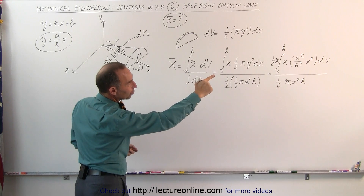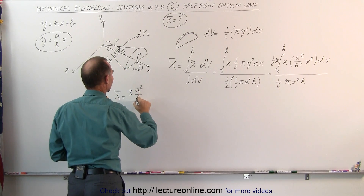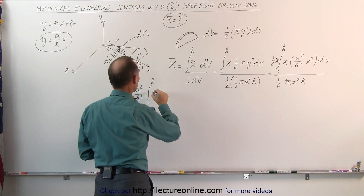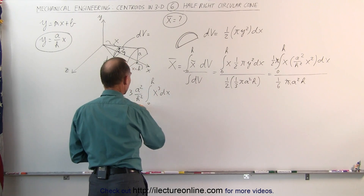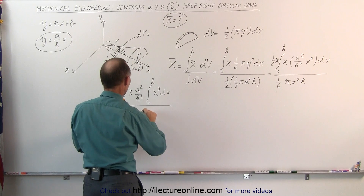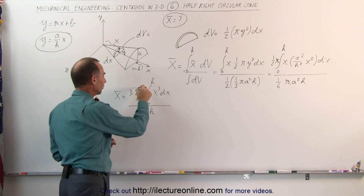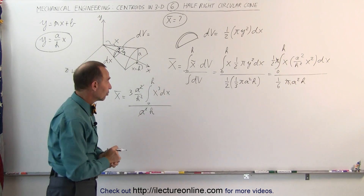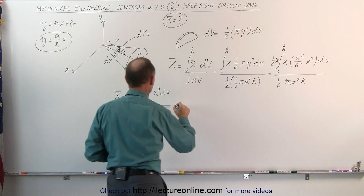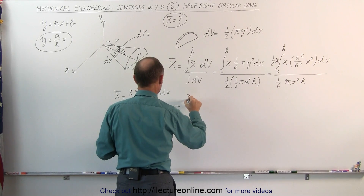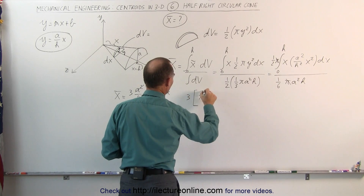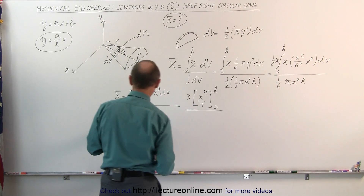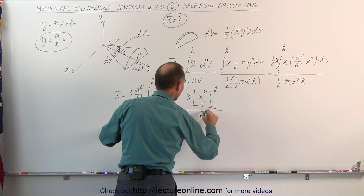The x-coordinate of the centroid equals three times the integral. We have a squared over h squared which we can take outside the integral sign, leaving the integral from zero to h of x cubed dx in the numerator. The a squared cancels with a squared in the denominator, and h squared combines with h to give h cubed in the denominator.